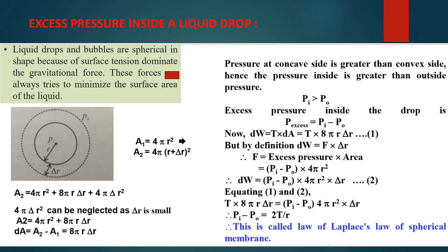In the case of a soap bubble, there are two free surfaces — the inner one and the outer one. Hence the change in surface area is double the previous case. In Equation 1, dW = T × 16πr·delta r. Equating with Equation 2, the excess pressure inside a soap bubble is Pi − Po = 4T/r.